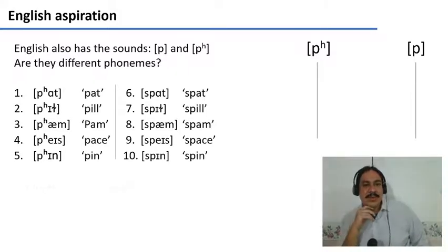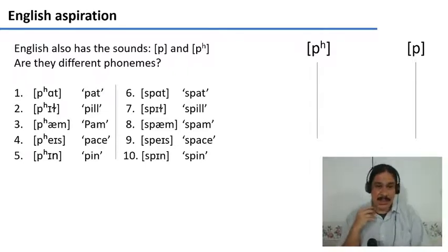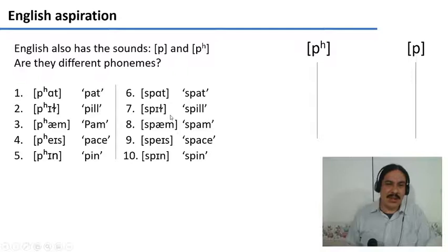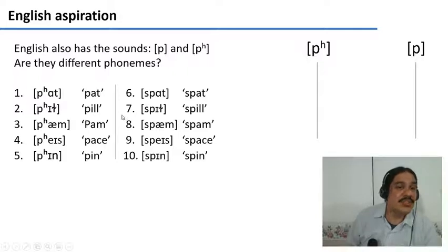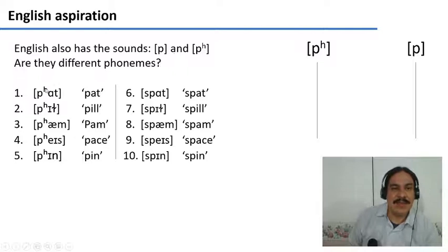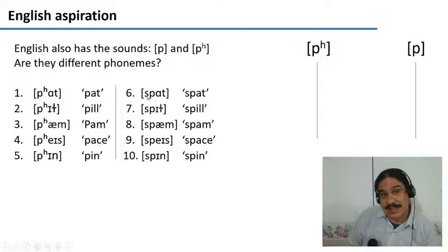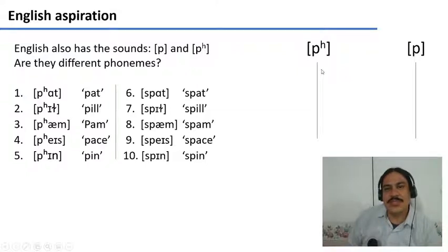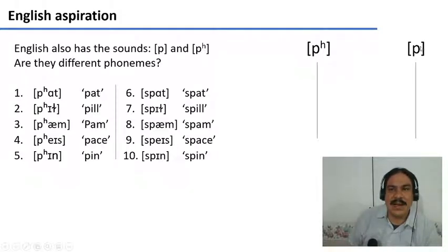So we have that these words are: pat, pill, pam, pace, pin, and spat, spill, spam, space, spin. So we have a small data set in English. Some of the words have the aspirated sound pa and some have the unaspirated sound pa. I want you to draw this on a piece of paper and then go through each data point and extract the environment where we find the aspirated p and the unaspirated p. For example, in example number one, the aspirated p is preceded by the edge of a word and followed by the vowel ah. Please pause the video.